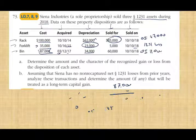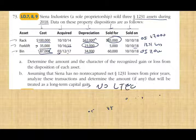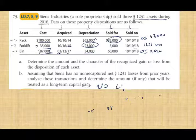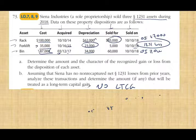Assuming Sienna had no recapture net Section 1231 losses from prior years, analyzing these transactions: there is no long-term capital gain. We have Section 1231 losses but no long-term capital gain. The $7,000 and $47,000 are both ordinary income due to Section 1245 depreciation recapture.